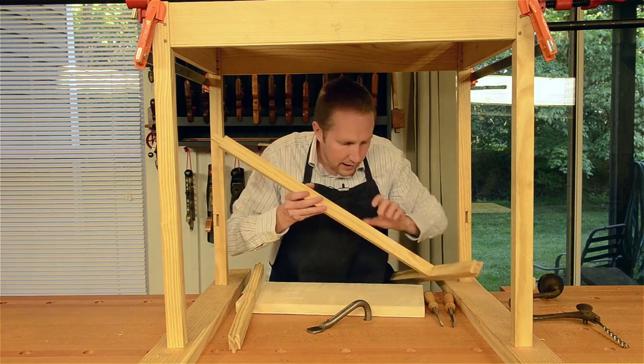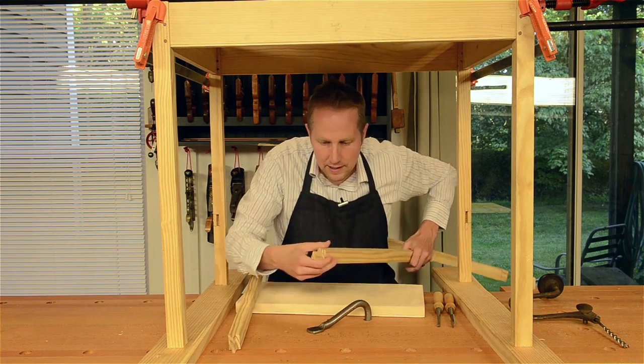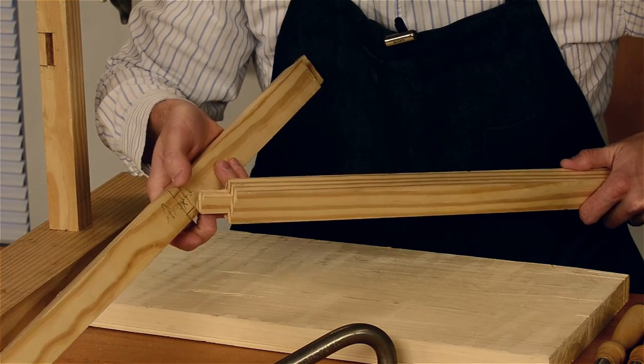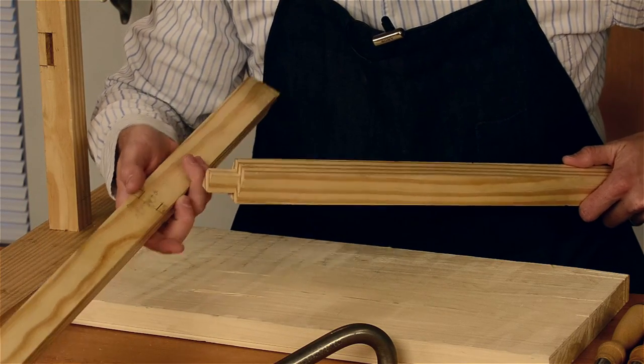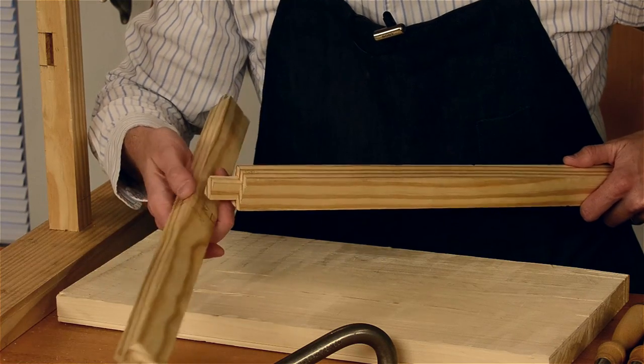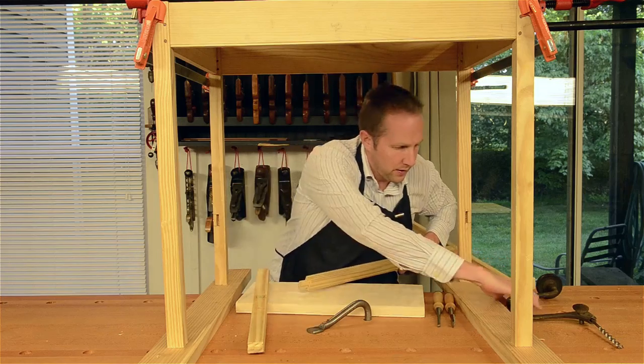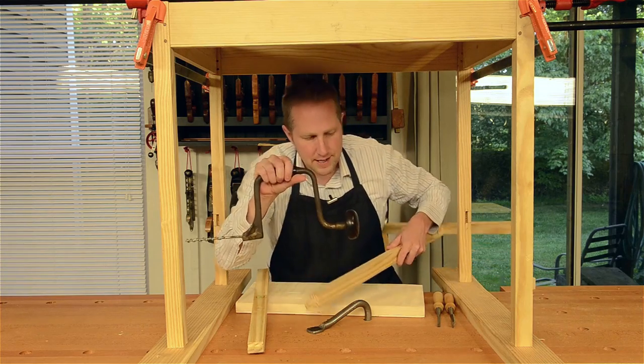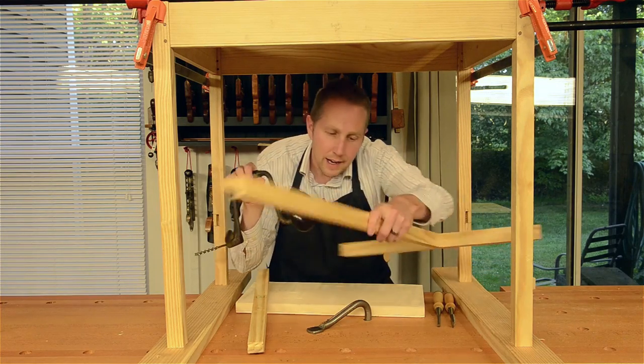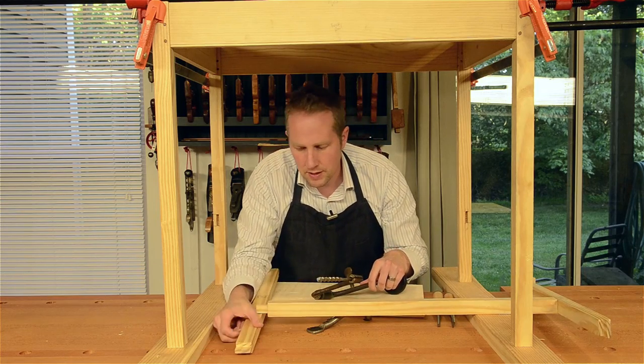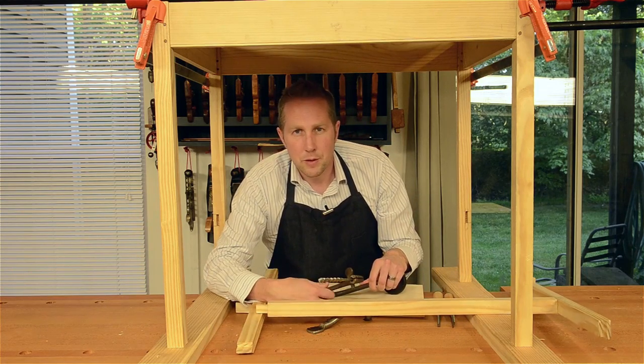You can see I've already cut the tenon here and laid out the mortise. So instead of just chopping this with a mortising chisel like we've done before, we're going to come at it from both sides with this tool, which is called a brace or a hand drill. Let's go over to the vice and I'll show you a trick that I've learned.